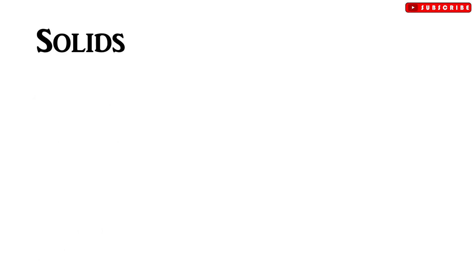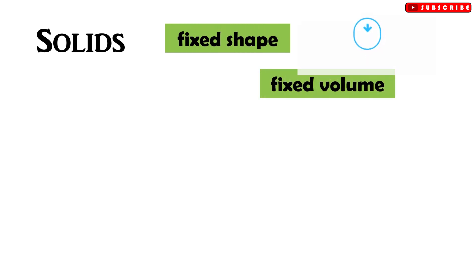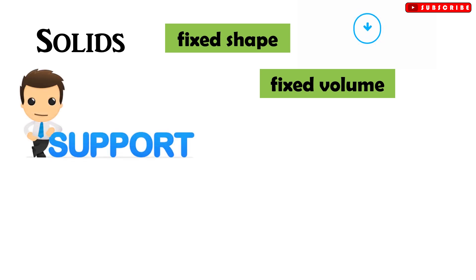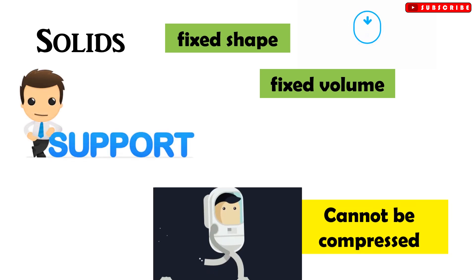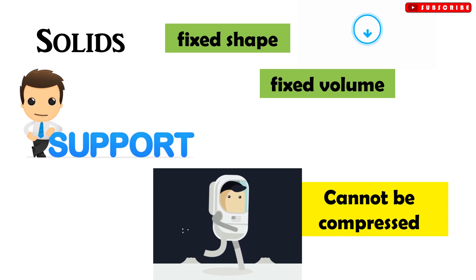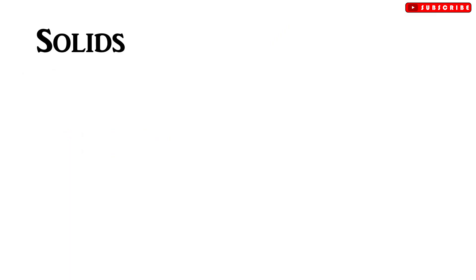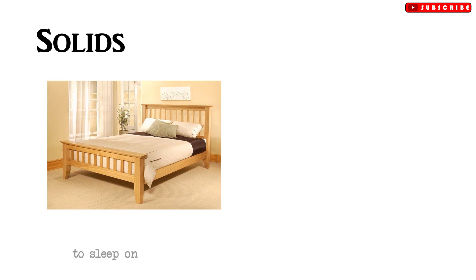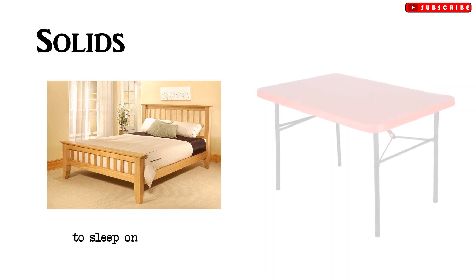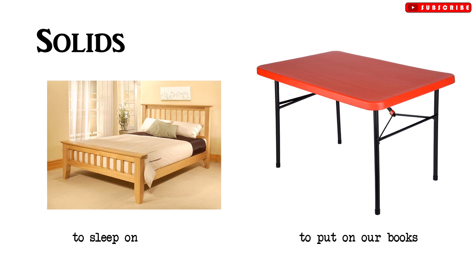Solids have fixed shapes and fixed volumes. We use them to provide support because they can keep their shapes and cannot be compressed. For instance, we use a bed to sleep on and a table to put our books on.